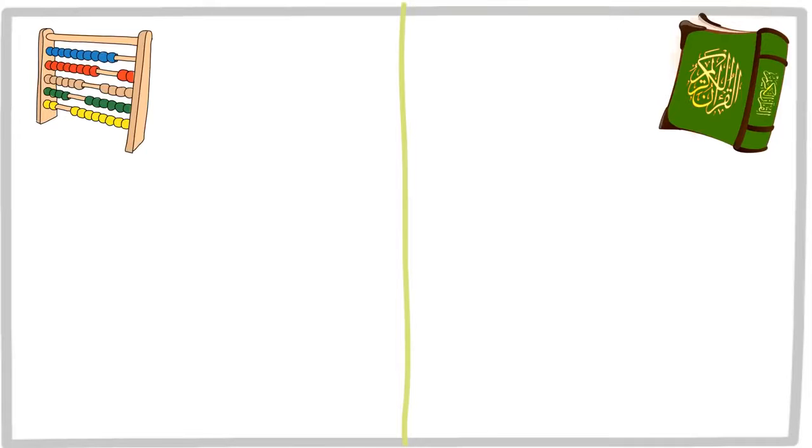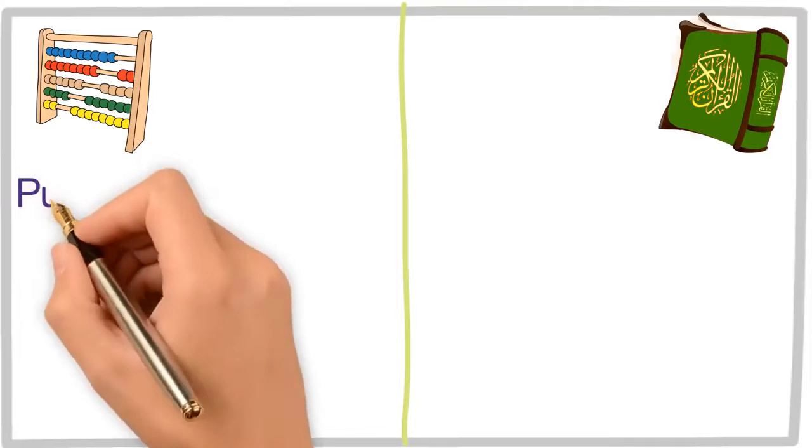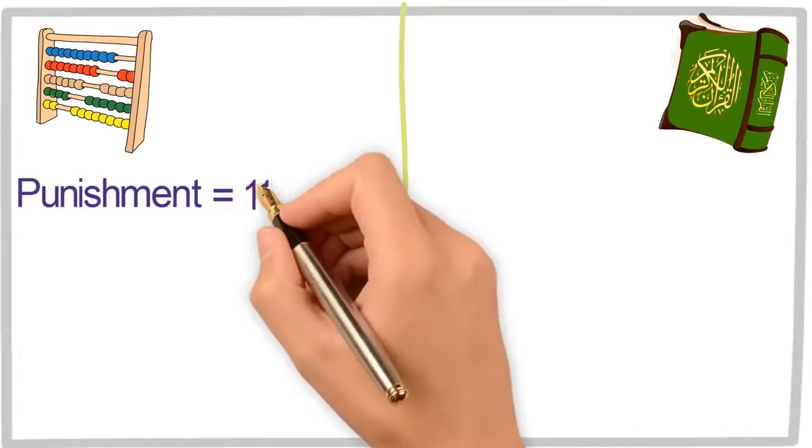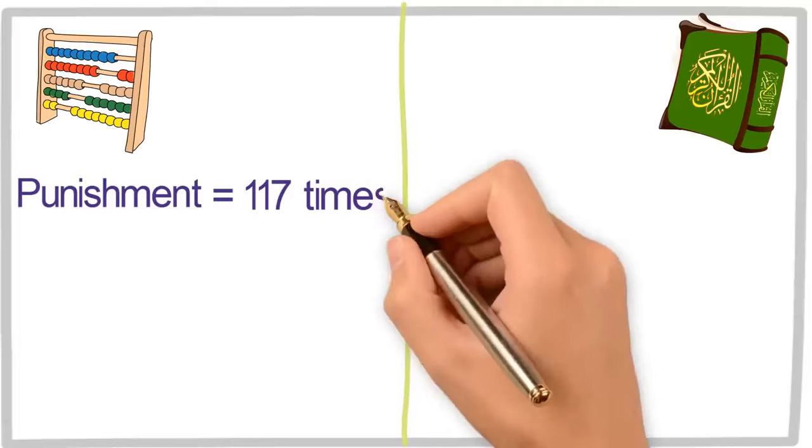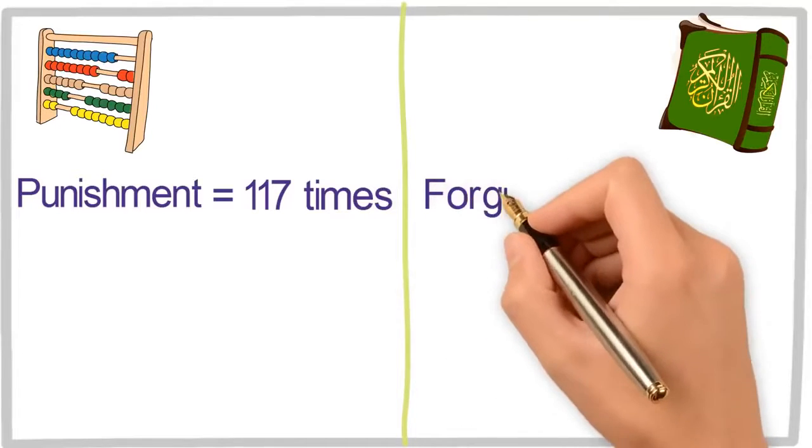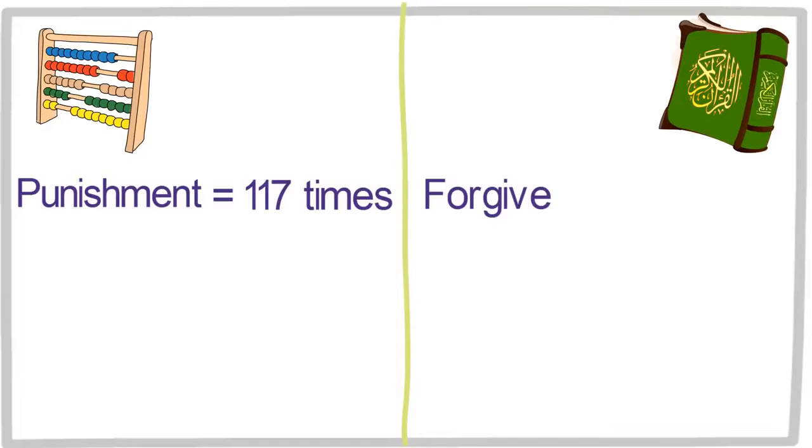For instance, if you count the word punishment in the holy Quran throughout the whole Quran, it is repeated 117 times, whereas the word forgive is repeated 234 times inside the whole Quran. If you multiply 117 by 2, you're gonna have 234.